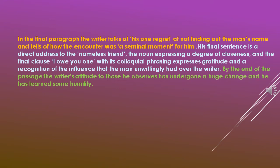In the final paragraph, the writer talks of his one regret — not finding out the man's name — and tells of how the encounter was a seminal moment for him. His final sentence is a direct address to the nameless friend, the noun expressing a degree of closeness. The final clause — 'I owe you one' — with its colloquial phrasing expresses gratitude and a recognition of the influence that the man unwittingly had over the writer. By the end of the passage, the writer's attitude has undergone a huge change and he has learned some humility.